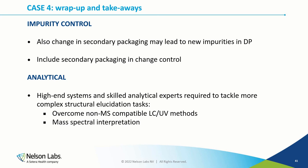At that stage it was still a tentative identification, so confirmation was needed by analyzing the reference standard of the proposed structure on the original LC-UV method. The retention time matched perfectly. The key learnings: leachables again, and you don't need to consider only primary packaging in direct contact with the drug product — secondary packaging through permeation may also lead to new impurities. You really need to include a risk assessment of secondary packaging in change control.